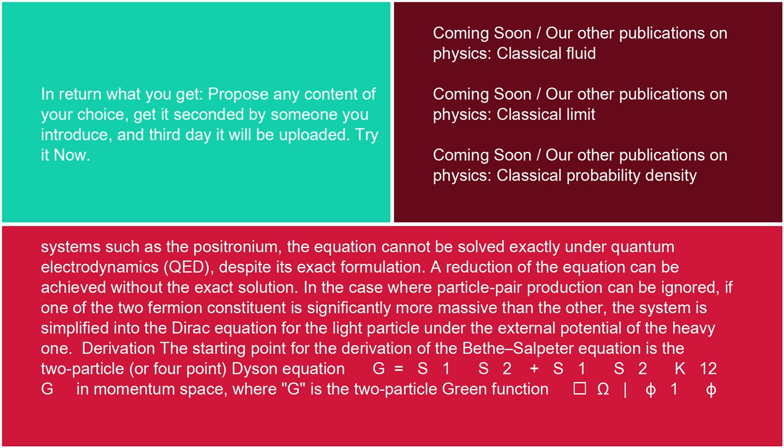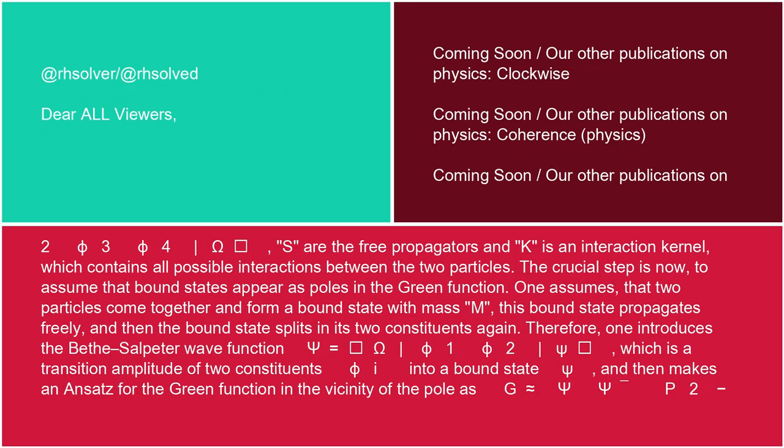Derivation: the starting point for the derivation of the Bethe-Salpeter equation is the two-particle, or four-point, Dyson equation: G equals S₁S₂ plus S₁S₂K₁₂G in momentum space, where G is the two-particle Green's function ⟨Ω|φ₁φ₂φ₃φ₄|Ω⟩. S are the free propagators and K is an interaction kernel which contains all possible interactions between the two particles.